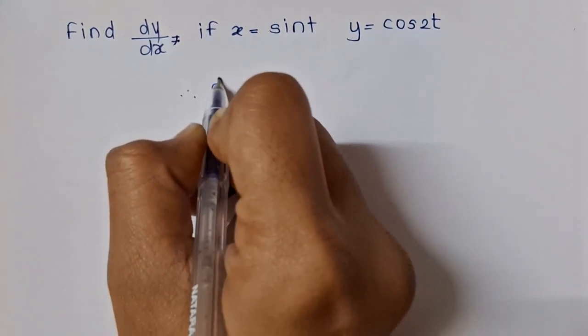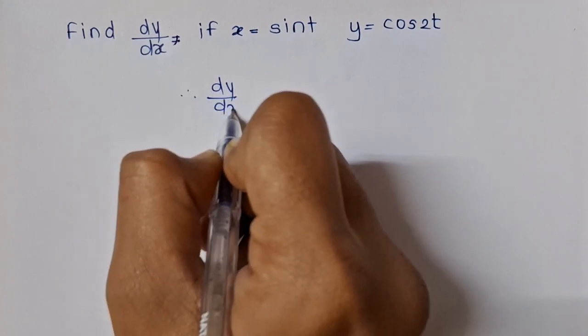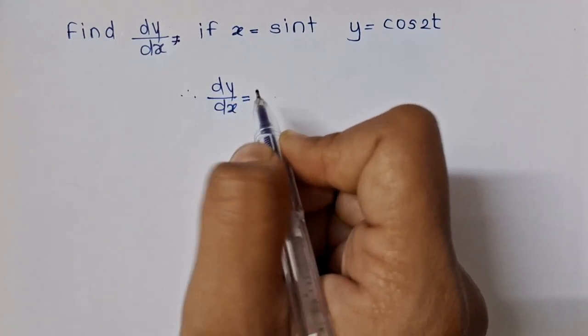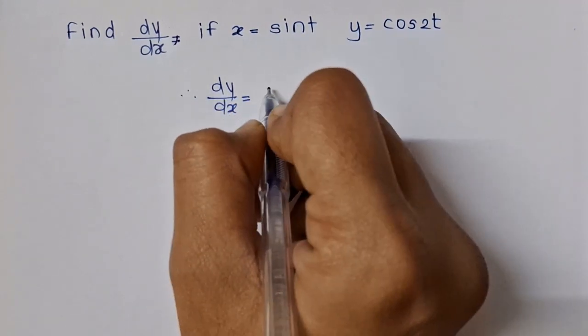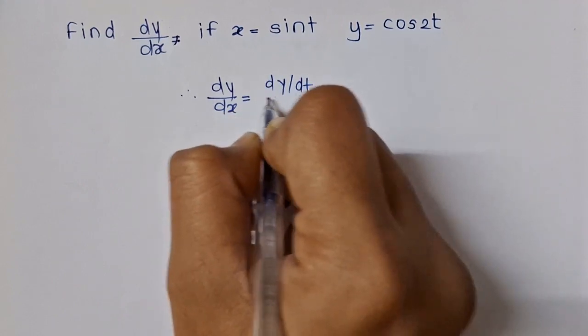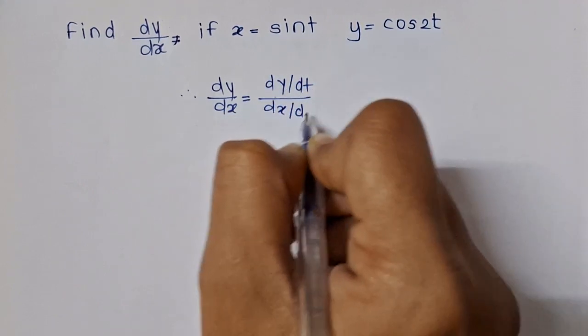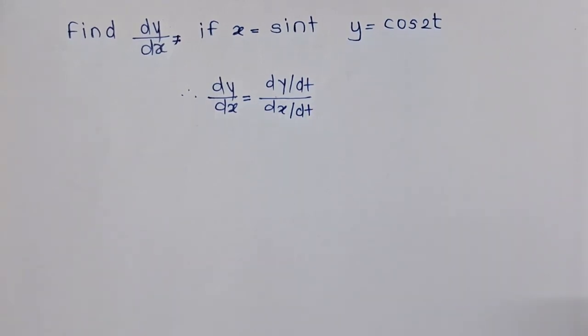By now we have understood that if there is no correlation between x and y, we will find dy/dt and dx/dt, that is using the parametric equations.